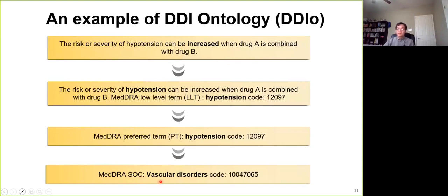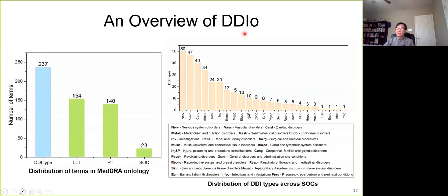The last step we map to the SOC level is mainly to describe the organ toxicity. So here's to give you an overview of DDIO, some statistical numbers. In the left figure, you will see the distribution of the terms in major ontologies in the DDIO. The right figure is the distribution of the DDI type across organ toxicity. You can see neural system, vascular cardiac, metabolism, and gastric toxicities pop out for drug-drug interactions.